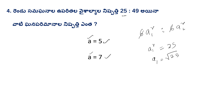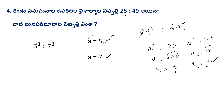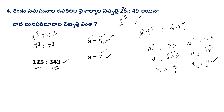A1 is equal to √25, so A1 = 5. A2² = 49, so A2 = √49 = 7. Now A3 = 7. Substituting: A1³ : A2³ = 5³ : 7³. A1³ = 125, A2³ = 343. That gives us the volume ratio answer.